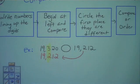The three is larger, so that means that number is going to get the bigger side of the sign, which is the greater than sign. Notice the bigger side of the sign is facing the bigger number. So you would read this, 19,320 is greater than 19,212.